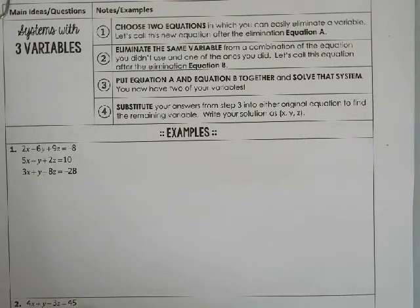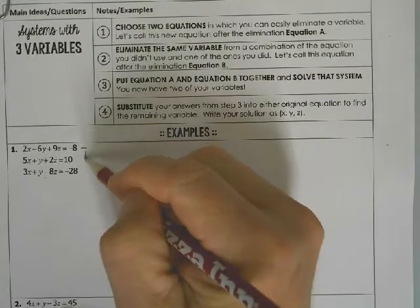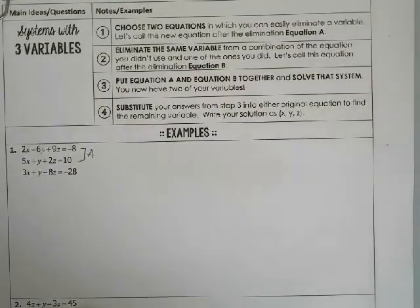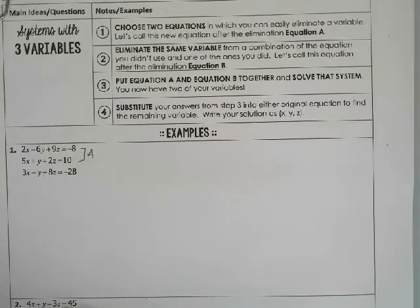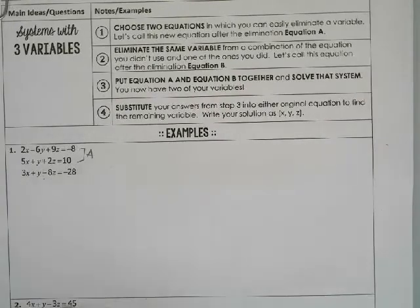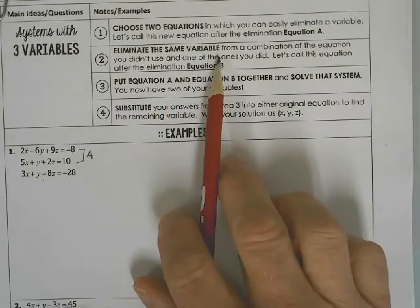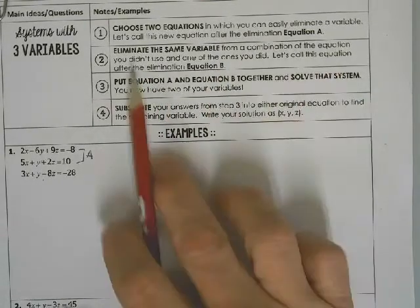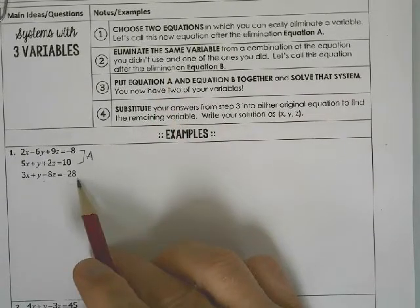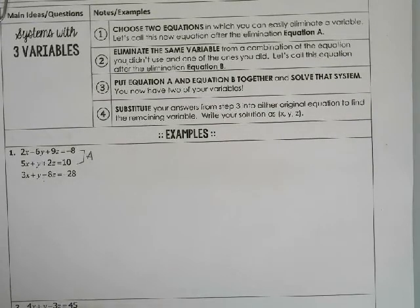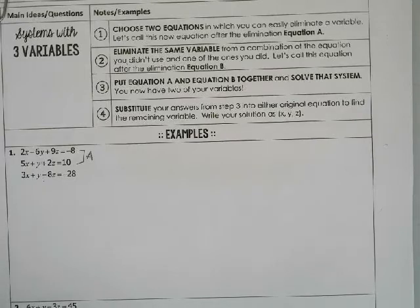Looking at these, I am going to pick the first two. Whenever we solve that elimination, we're going to eliminate one of the three variables and call that equation A. Then eliminate the same variable from a combination of the equation that you didn't use — this last one — and one of the ones you did. Let's call that, after you eliminate the variable, equation B.